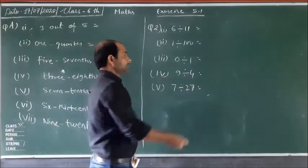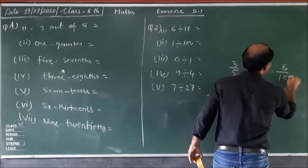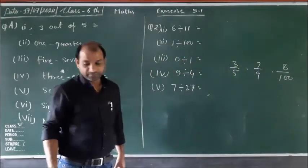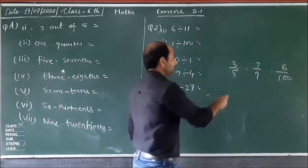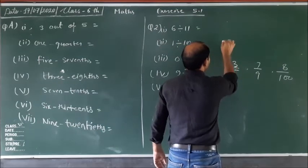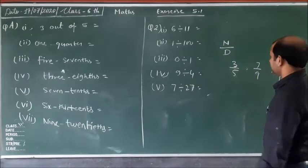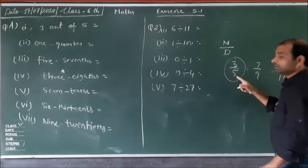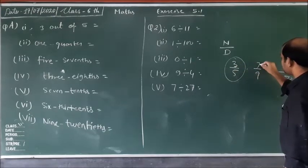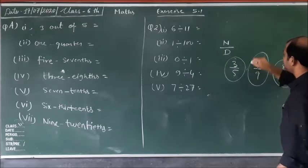Now, proper fractions: 3 upon 5, 7 upon 9, 8 upon 100. These are proper fractions — fractions in which the numerator is less than the denominator. We write a fraction as numerator upon denominator. Here, 7 upon 9: 7 is less than 9. Here, 8 upon 100: 8 is less than 100. So these fractions are proper fractions.